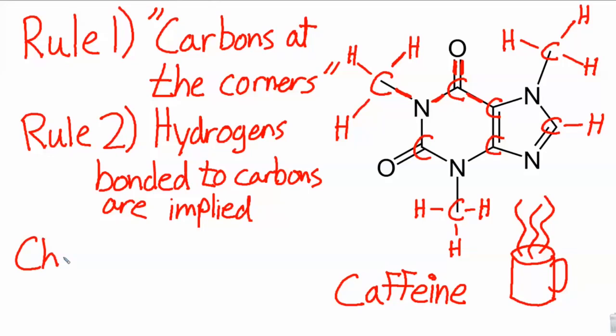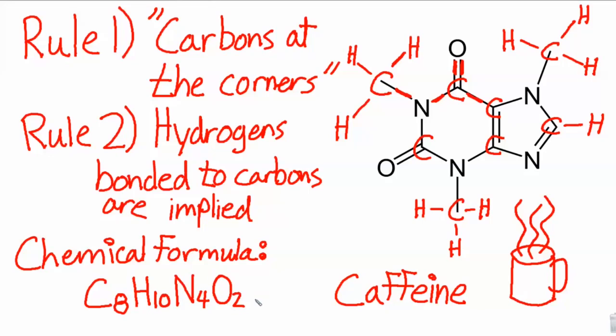So now we can write out a chemical formula. How do we do that? We tally up how many atoms of each type make up the molecule. And in this case, if we count out the carbons, we have eight. If we count out the hydrogens, we have 10. What about nitrogens? I see 4. Oxygen, I see 2. C8, H10, N4, O2. Bingo! That's our chemical formula.